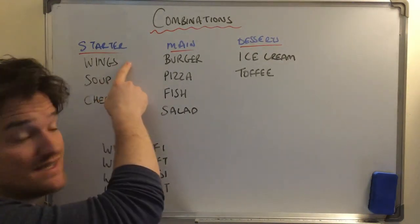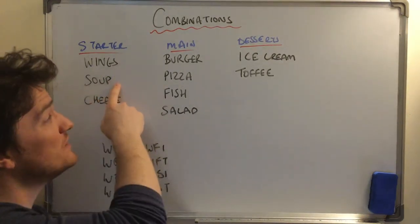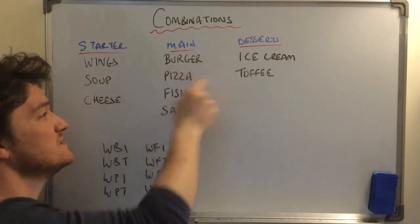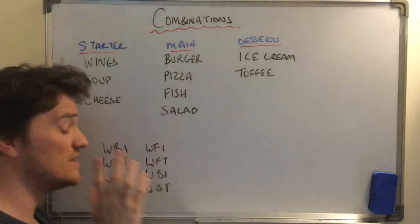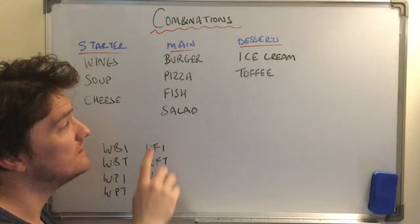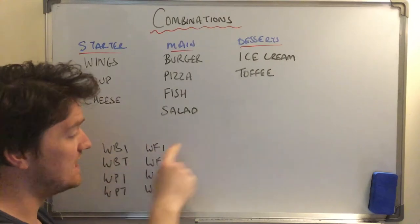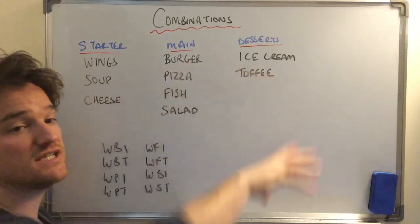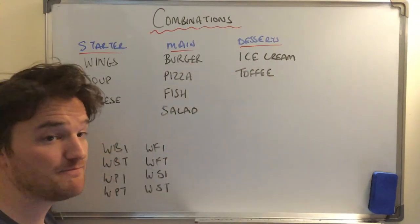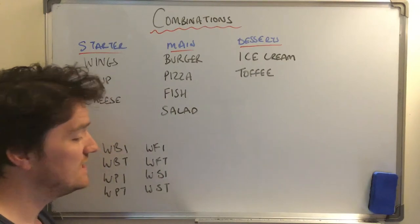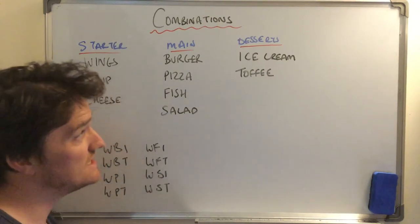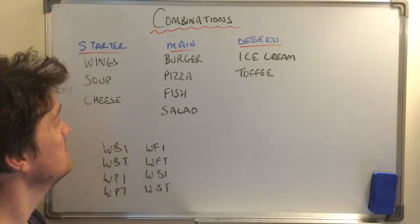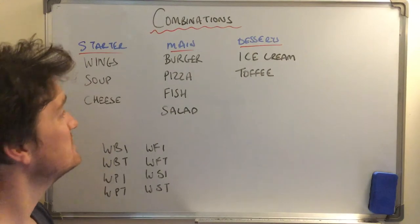If I do soup, then soup-burger gives two options, soup-pizza gives two more. You might realise there are eight options for soup, and eight options for cheese. That gives us eight plus eight plus eight — twenty-four options in total.